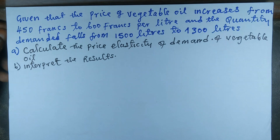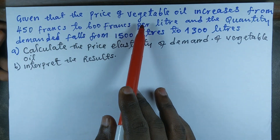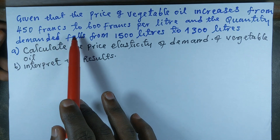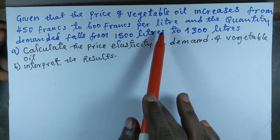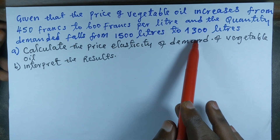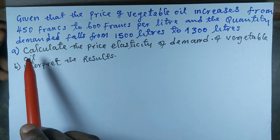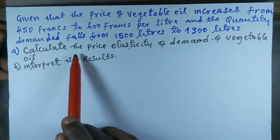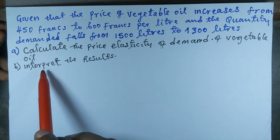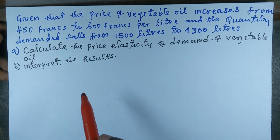Welcome to another session of Sam's Economics Tutorials. In today's video, I'm going to teach you how to calculate price elasticity of demand. The question given states that the price of vegetable oil increases from 450 francs CFA to 600 francs CFA per liter, and the quantity demanded falls from 1,500 liters to 1,300 liters. Part A asks us to calculate the price elasticity of demand, and Part B asks us to interpret the results.